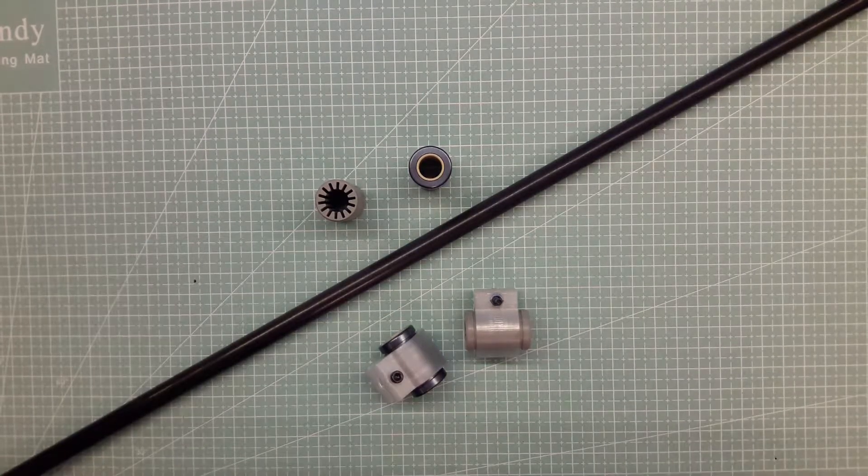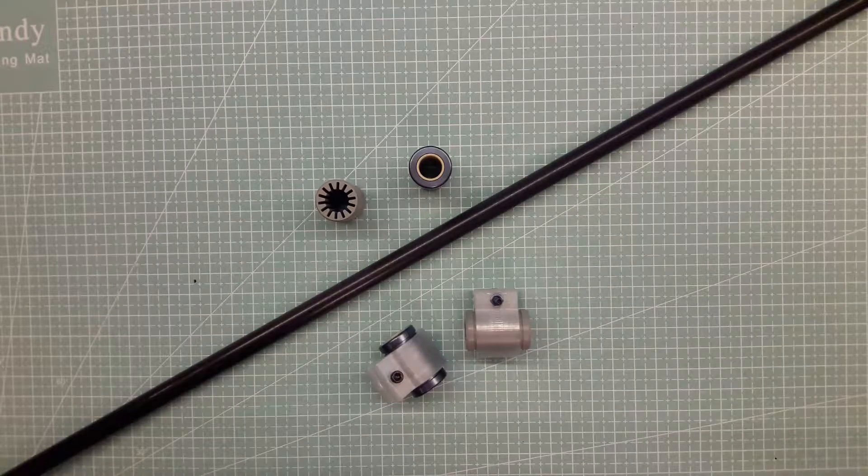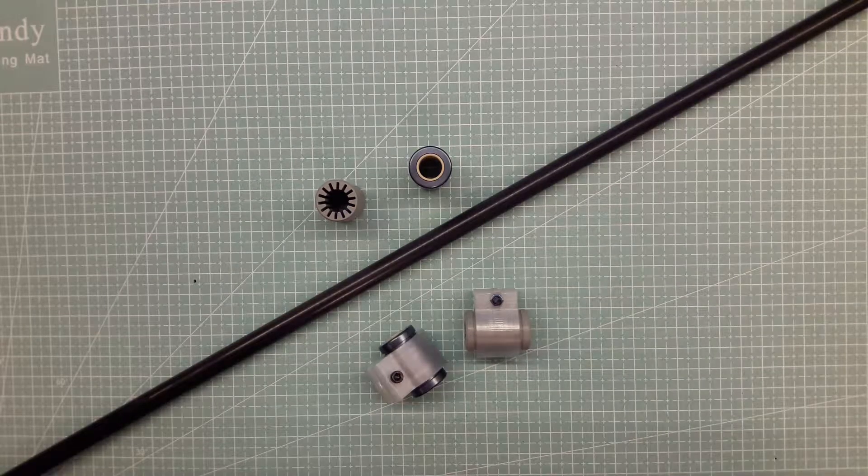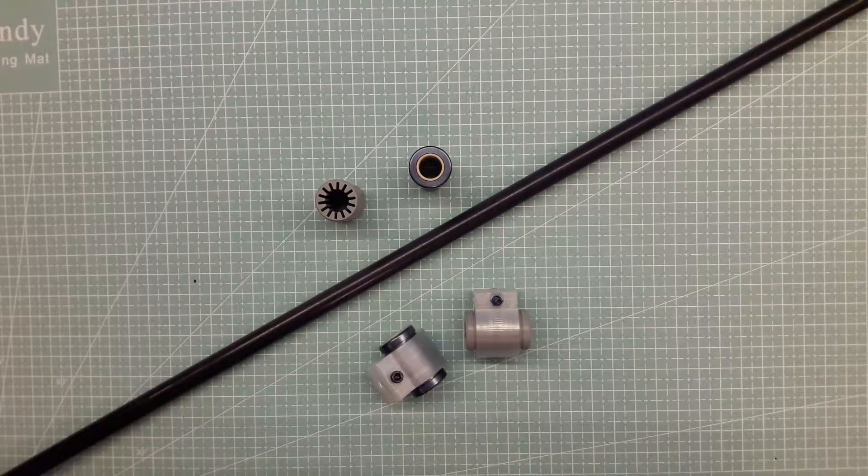What is up guys, Karl here. Today we're having a look at some linear bearings from Igus. This is a special version which you've mostly seen in those kits that you can buy from Banggood, eBay, gear vests.